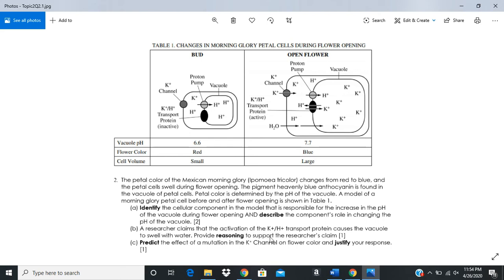A researcher claims that the activation of this transport protein causes the vacuole to swell with water. Why does that happen? When you look at this, you see potassium going in. Initially there wasn't really any potassium in the vacuole, but once this mechanism kicks in, we see potassium gets pumped in here, and then from the cytoplasm it gets moved into the vacuole. As the vacuole fills with potassium, water is going to flow in. Why is that happening? Because water is moving down its gradient. We're creating a more hypertonic solution in there - it's more concentrated, there are more ions in there, and so the water is going to move into that vacuole.